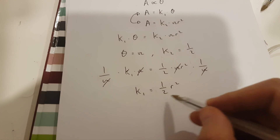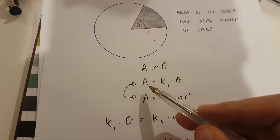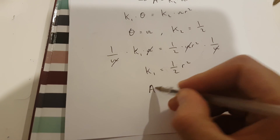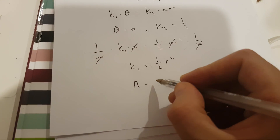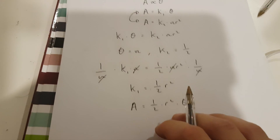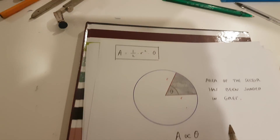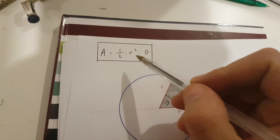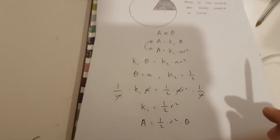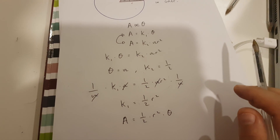Now if k1 is equal to half multiplied by r squared, and the area of the sector is equal to k1 multiplied by theta, this means that the area of the sector has to be half multiplied by r squared multiplied by theta. This is the formula for the area of a sector. So we've proven that the area of a sector is half multiplied by r squared multiplied by theta. If you have any questions related to this video, please leave your comments below. Thank you very much for watching.